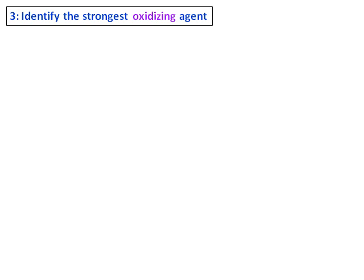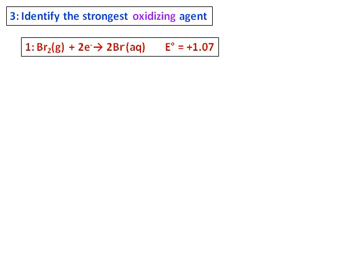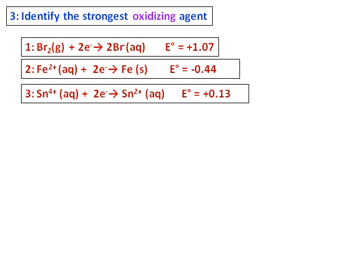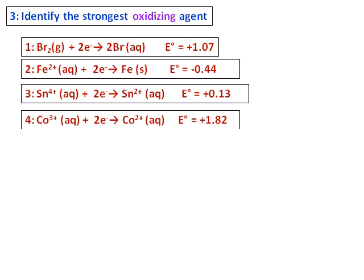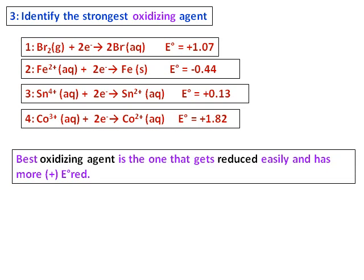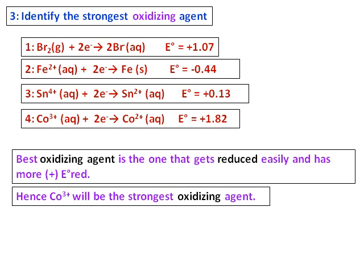Identify the strongest oxidizing agent. You are given: equation 1 with Br₂, equation 2 with PbO₂²⁺, equation 3 with Sn⁴⁺, and equation 4 with Co³⁺. The best oxidizing agent is the one that gets reduced most easily and has the most positive E⁰. Looking at the values, Co³⁺ has the most positive E⁰ value, so Co³⁺ will be the strongest oxidizing agent.